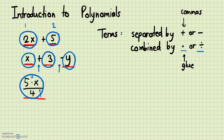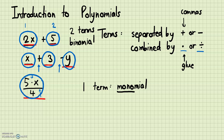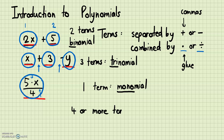Whenever you see a polynomial with just one term, these have special names. When there is one term, that is called a monomial — mono means one. Two terms is called a binomial — bi means two. The middle one with three terms is called a trinomial — tri means three. The terms with one, two, and three terms have special names, but if they have four or more terms, we just call them a polynomial.